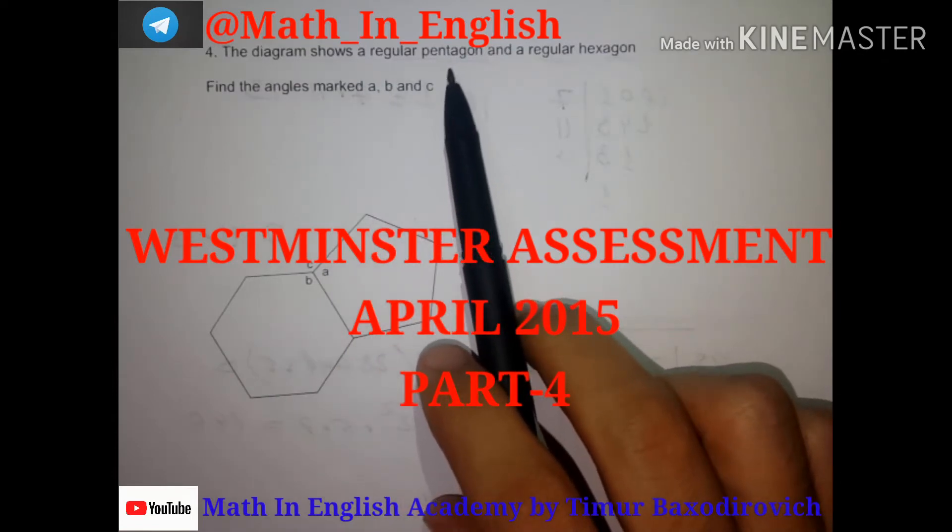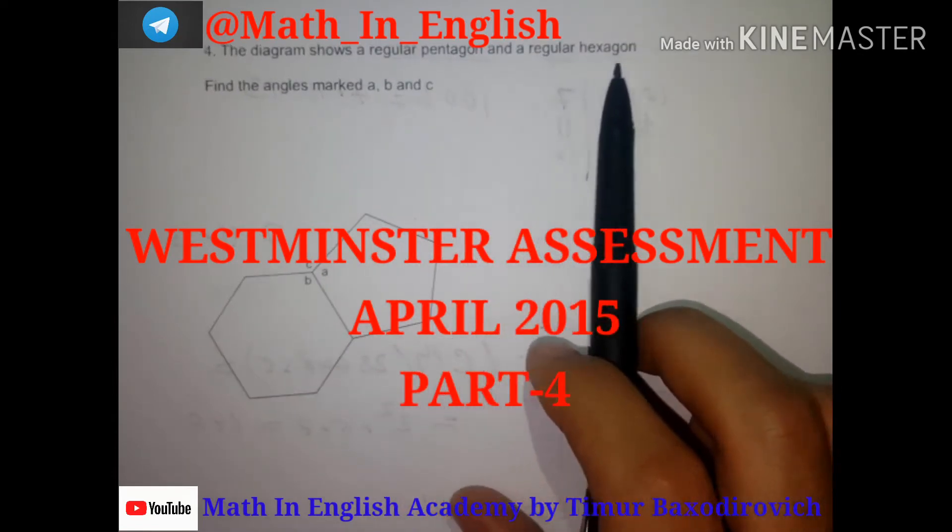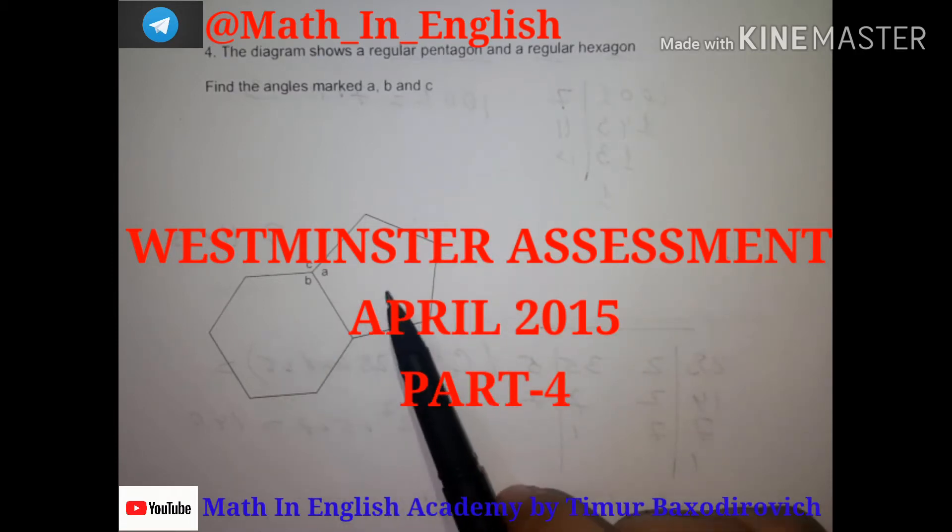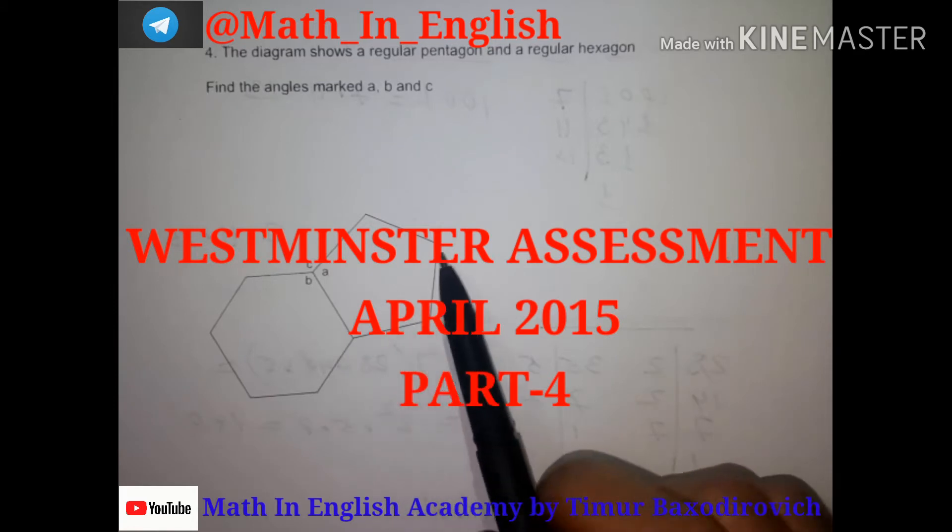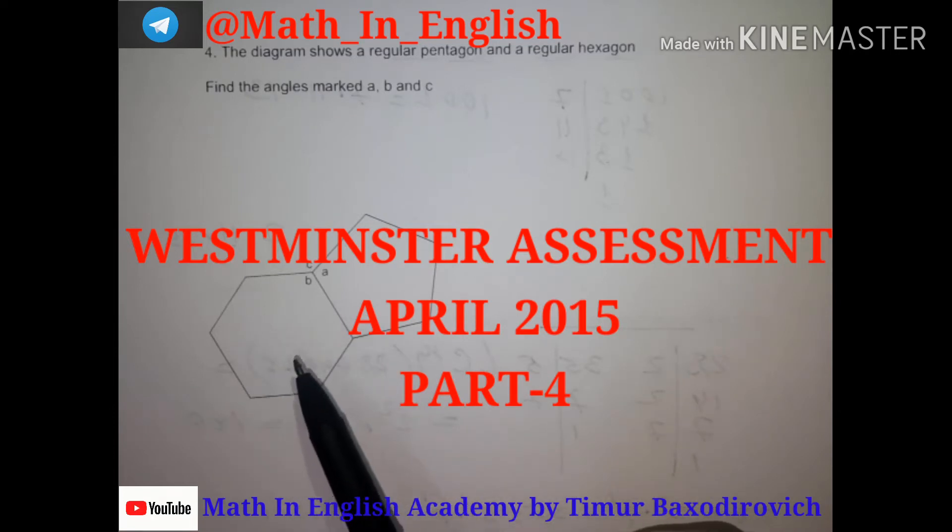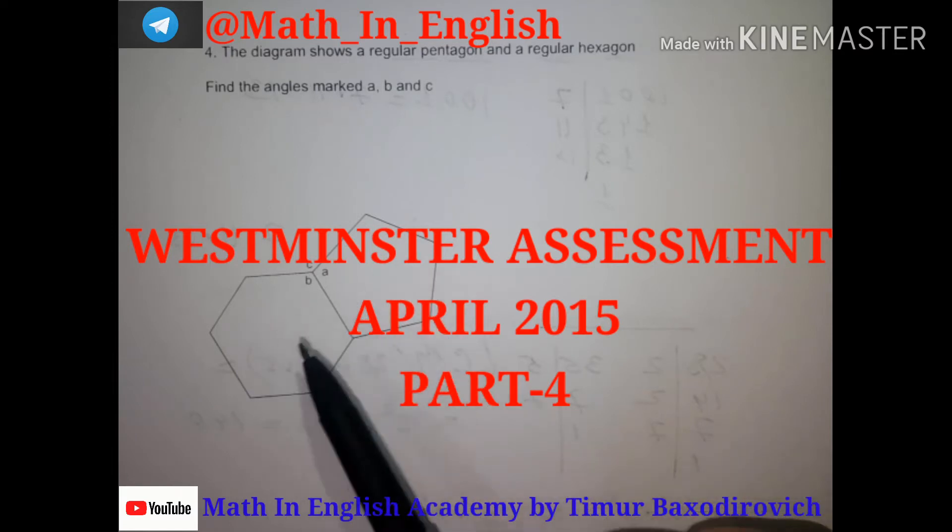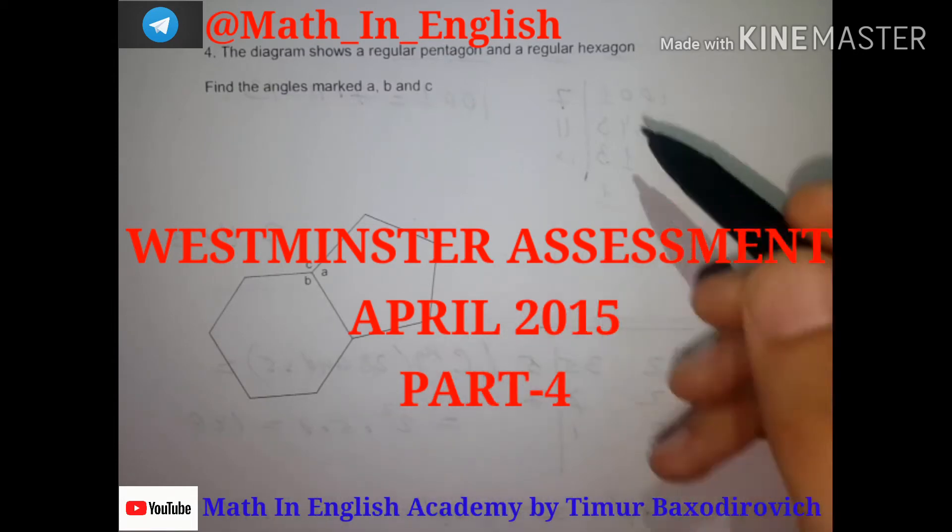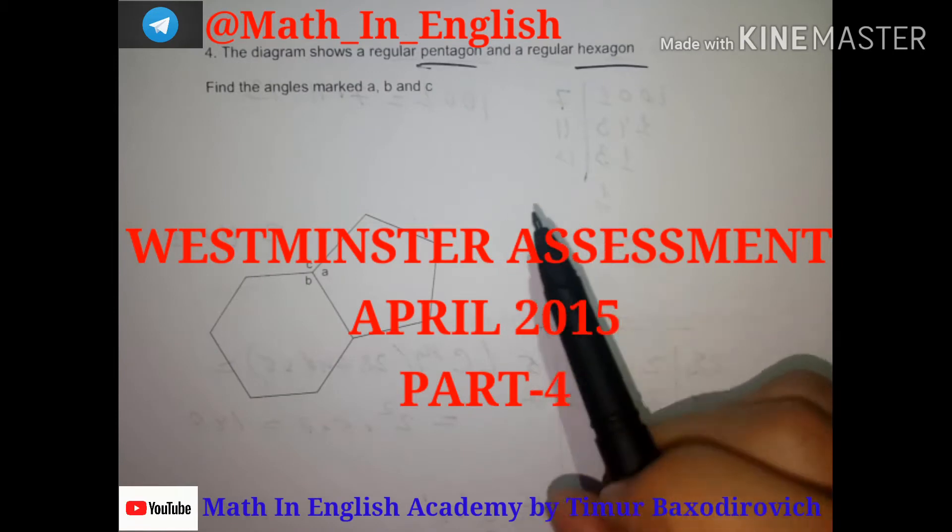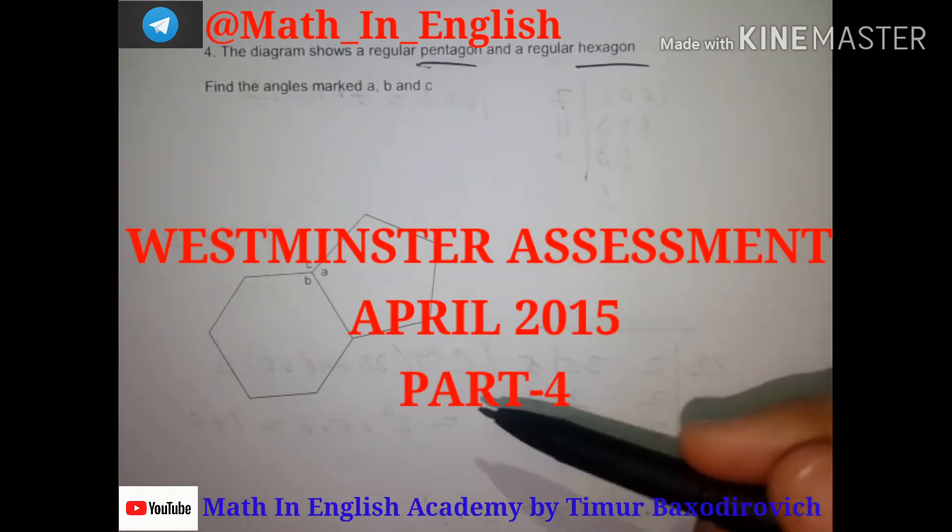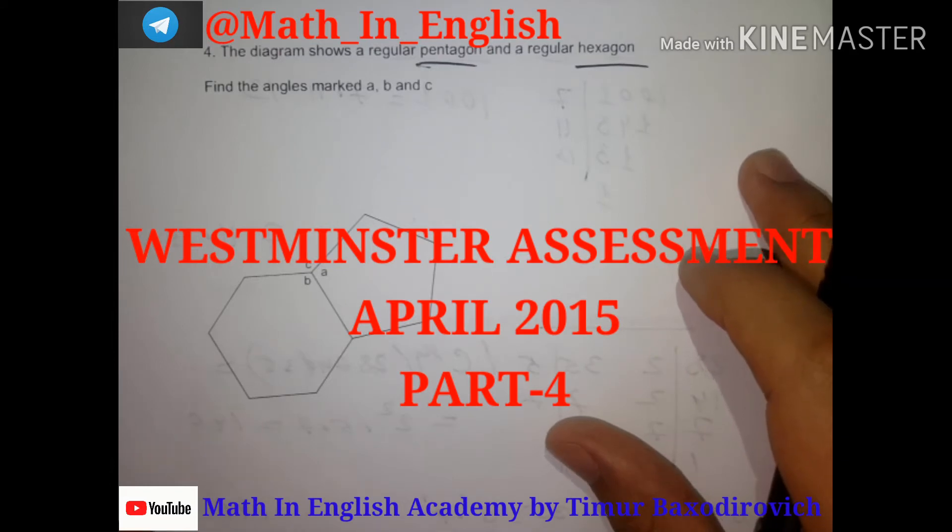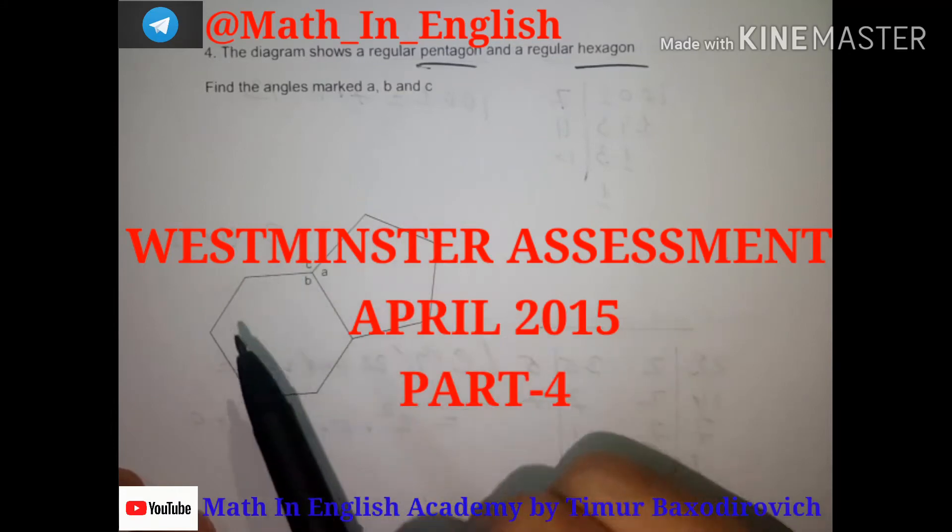The diagram shows a regular pentagon and a regular hexagon. Find the angles marked a, b, and c. This shape is a pentagon - five angles. This shape is a hexagon - six angles. We should know the difference between them. This means we should work with vocabulary. If you know the academic words in math, it's always super easy to get the question fully.